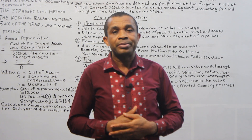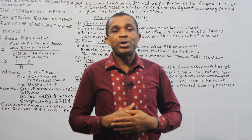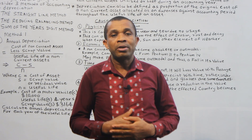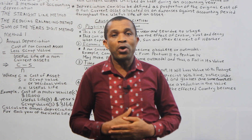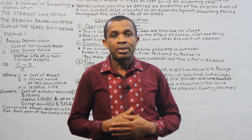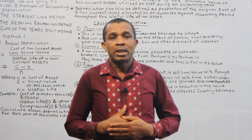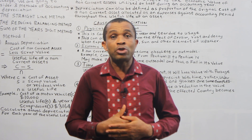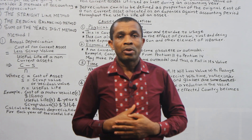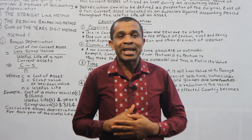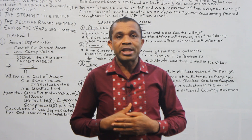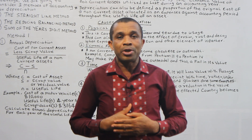Secondly, economic factors. A non-current asset can become obsolete or outdated. For example, a computer model upgrade from Pentium 3 to Pentium 4 may make the Pentium 3 become an old model, causing a fall in value. Thirdly, time — whether an asset is put into use or not, it will lose value with the passage of time. Fourthly, fluctuations in exchange rates can cause a reduction in the value of a non-current asset if the currency of the affected country becomes cheaper.